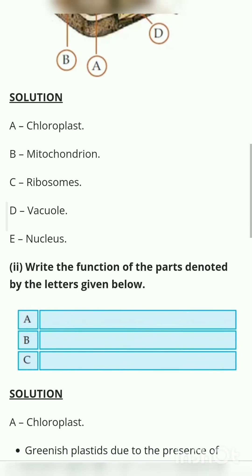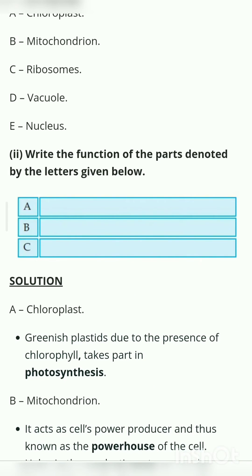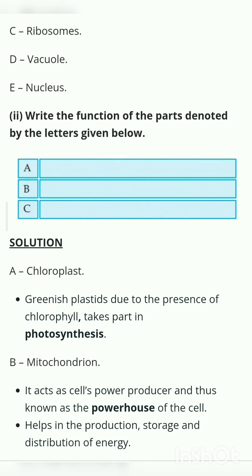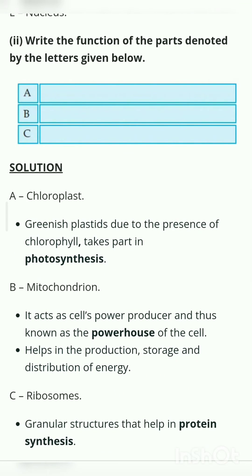The solution: A - Chloroplast: greenish plastids due to the presence of chlorophyll, takes part in photosynthesis. B - Mitochondrion: it acts as the cell's power producer and thus known as the powerhouse of the cell.